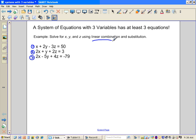What we're going to do is use some linear combination and then some substitution in order to solve for x, y, and z. Using linear combination first, I'm just going to look at the top two equations so that I can try and eliminate one of the variables. If I look at the top equation, x plus 2y subtract 3z equals 50, I think I'm going to multiply the top equation by negative 2 so that when I rewrite equation one here, I have negative 2x subtract 4y plus 6z is equal to negative 100.